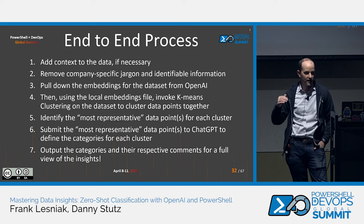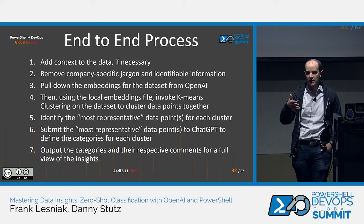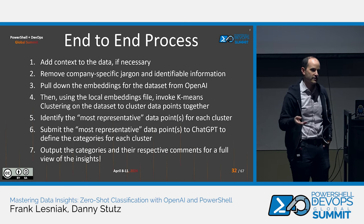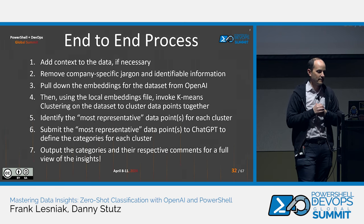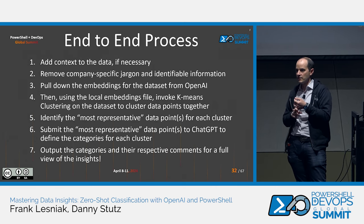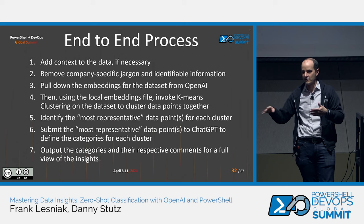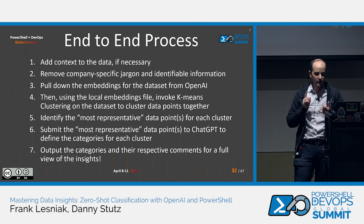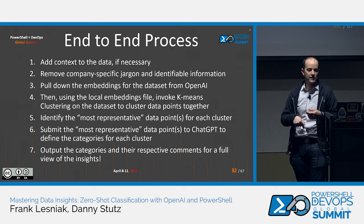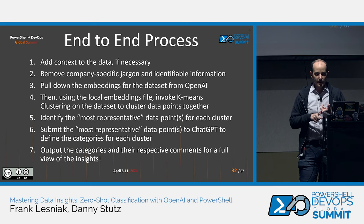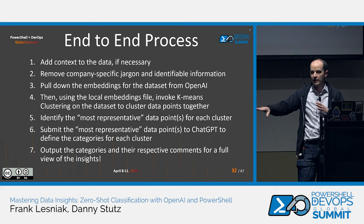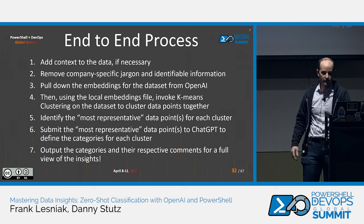Just to summarize, here's the end-to-end process: First, add context to the data if necessary — if answers to questions don't make sense on their own, do a string concatenation and add the question. Second, remove any company-specific jargon or identifiable information. Third, pull down the embeddings for the data set from OpenAI — those coordinates we were talking about. Fourth, use that local embeddings CSV on disk and perform k-means clustering on it, maybe iteratively to change the number of clusters. Finally, identify the most representative data points and submit those to ChatGPT to define the categories for each cluster, then output that information to a CSV. That's the end-to-end process.